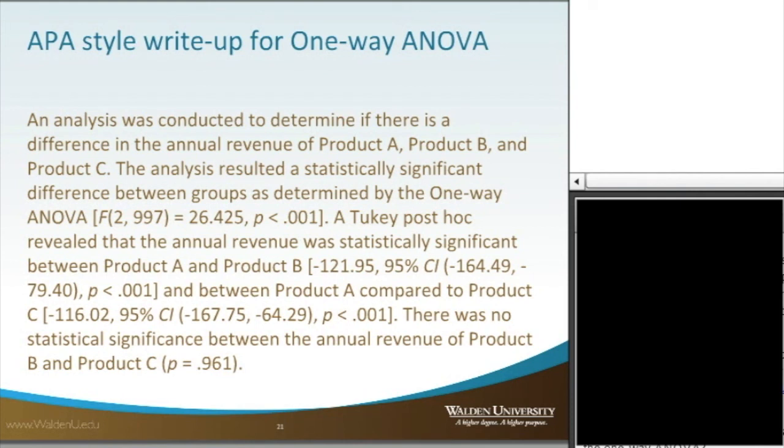A Tukey post-hoc revealed that the annual revenue was statistically significant between product A and product B, which is negative 121.95, with our confidence interval of negative 164 to negative 79, p value less than .001, and also between product A compared to product C, which is negative 116, with a confidence interval ranging from negative 167 to negative 64, p value less than .001.